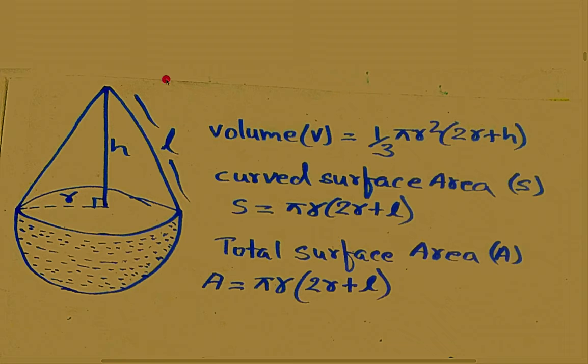Now see here to find the volume of this cone. Volume V is equal to 1/3 πr²(2r + h). Using this formula we will find the volume of this combined figure.